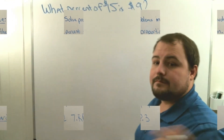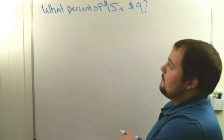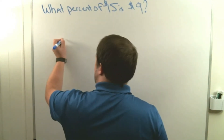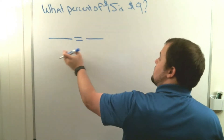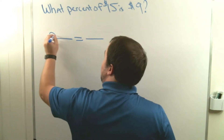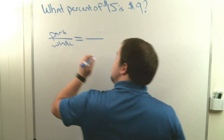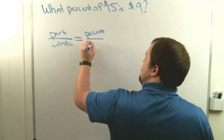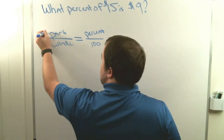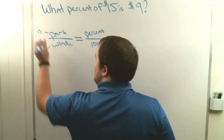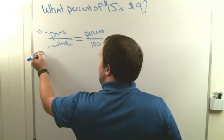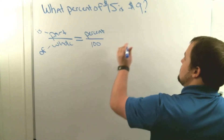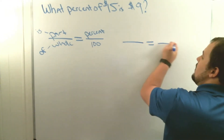Let's go ahead and write down the percent proportion as we solve some problems. In our first example, we're going to be solving: what percent of fifteen dollars is nine dollars? We start with our percent proportion equation — a fraction equals a fraction. The word 'part' goes on top and 'whole' goes on bottom. A percent goes on top over 100. There are keywords: 'is' typically means that's the part, and 'of' typically means that's the whole.